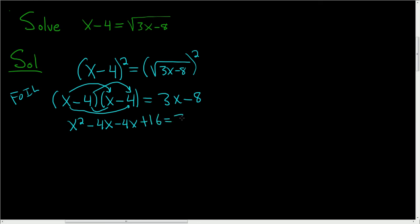And on the right-hand side, we still have 3x minus 8. Let's collect like terms. We have x squared, negative 4x, and another negative 4x is negative 8x. And we still have the plus 16, and this is equal to 3x minus 8.